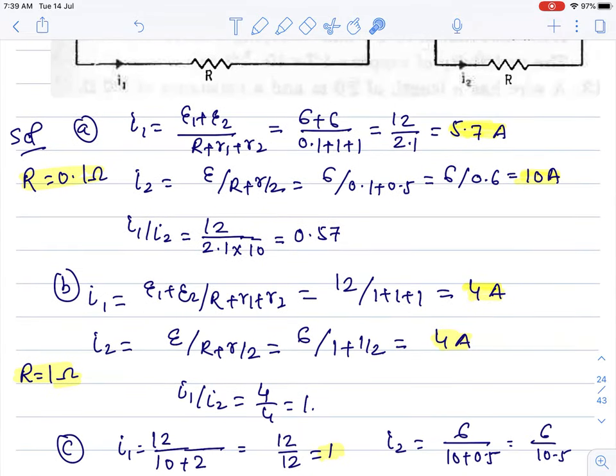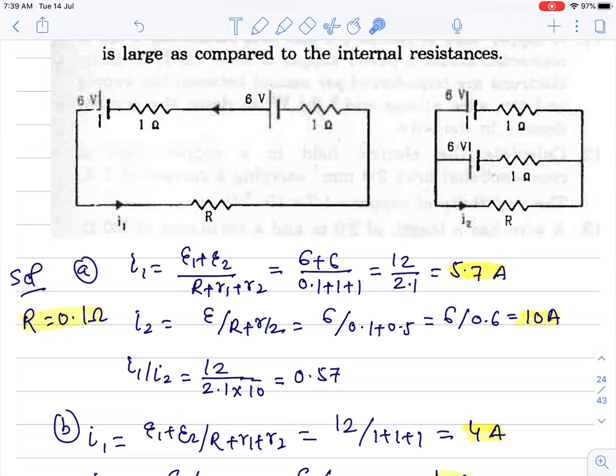Second case follows the same logic. Here it remains the same. After calculation, 12 by 3 equals 4 ampere. And here also with same formula, R plus R by 2, 6 divided gives 4 ampere. As resistance increases slightly - we made it 1 ohm - current in both becomes the same. I1 equals I2. This is again an important objective question.